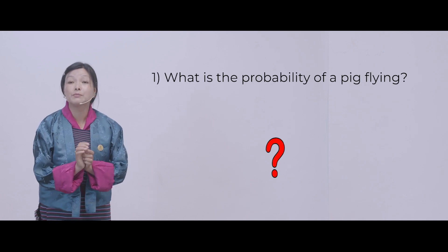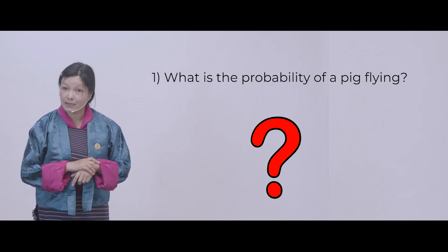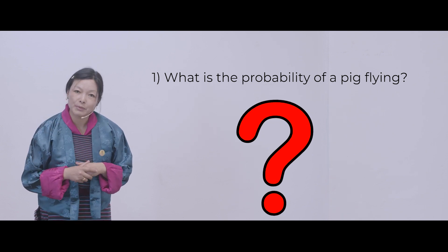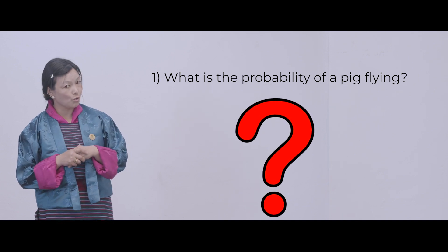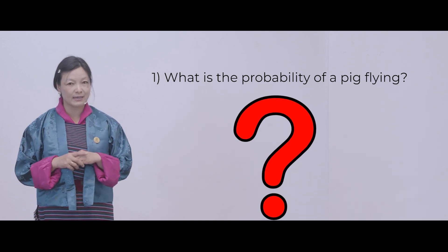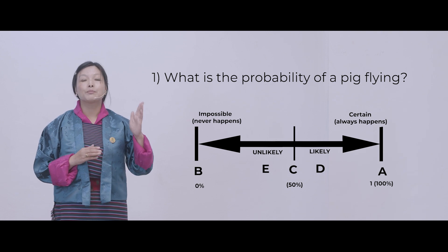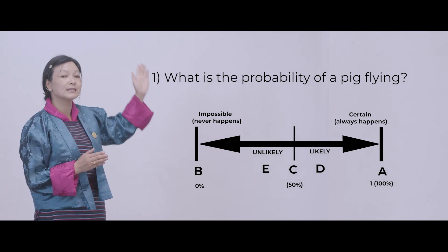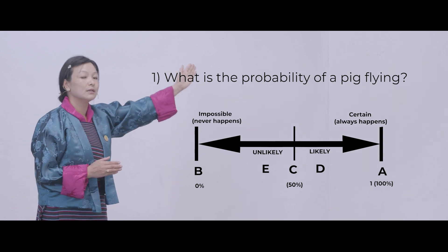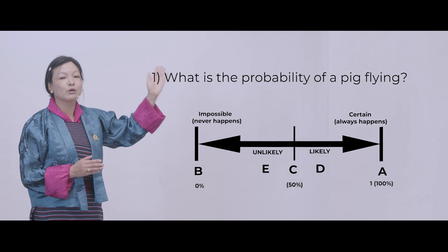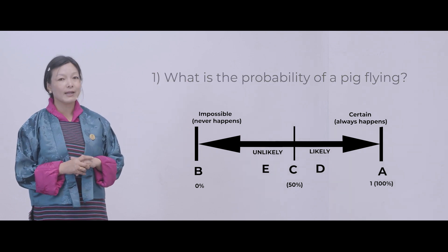Now let's look at some more examples. What is the probability of a pig flying? Have you ever seen a pig flying? No, we never see a pig flying — only birds fly. So if you put it on a probability scale, it will be at 0 because it is impossible.